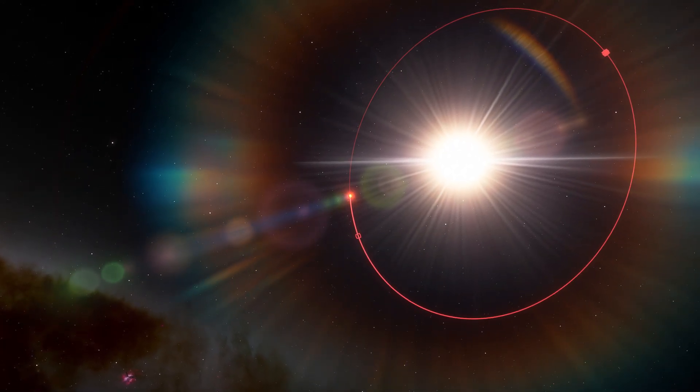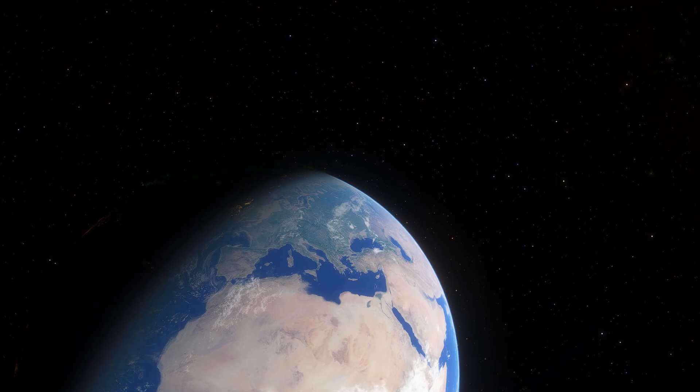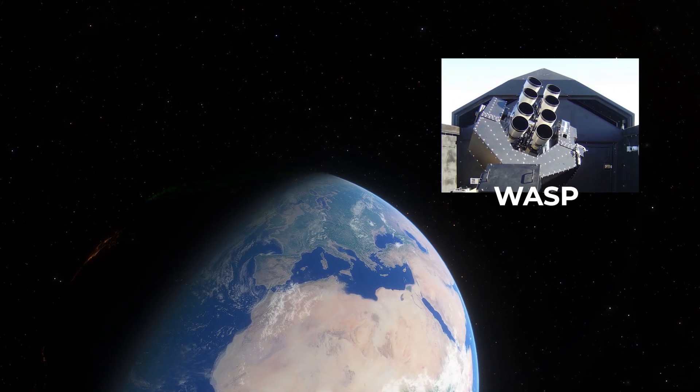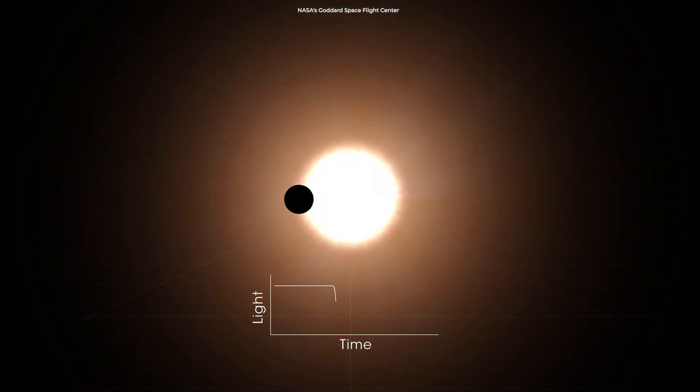The exoplanet was discovered in 2011 when a ground-based telescope known as WASP, short for Wide Angle Search for Planets, found a subtle, periodic dimming of light as the planet passed across the star.